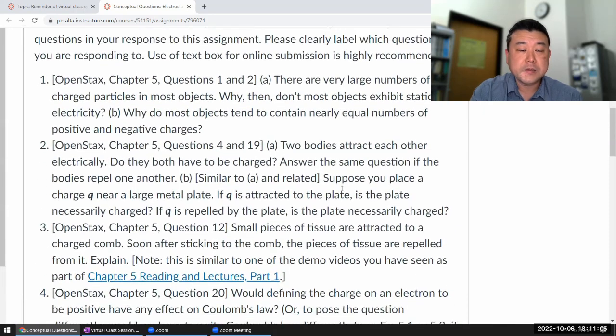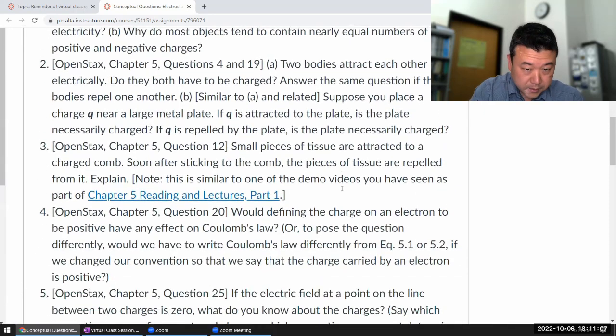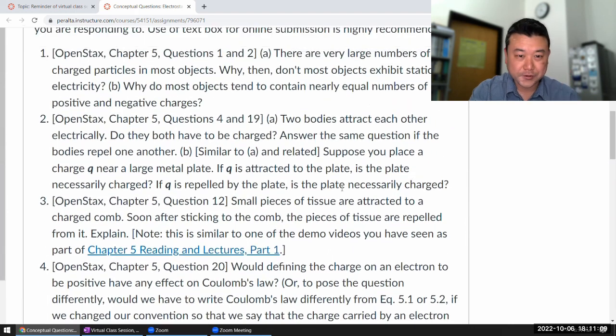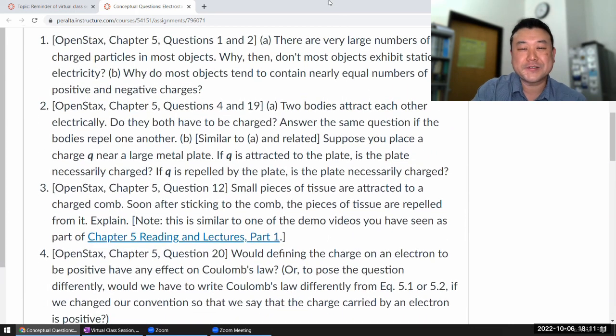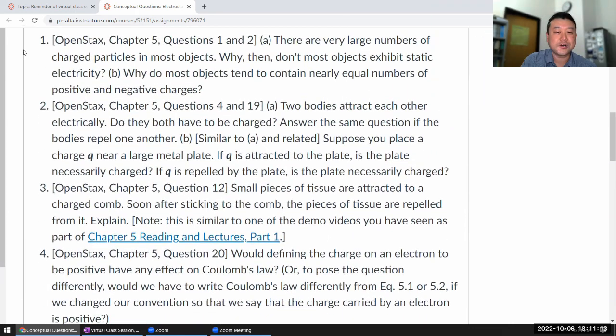So let's see, and they are all from chapter N, they usually are. Okay, the first question: there are very large numbers of charged particles in most objects. Why then don't most objects exhibit static electricity? Because they have net, so add positive and negative charges, add them all up together, they have net zero charge.